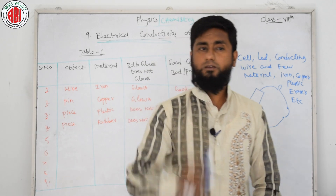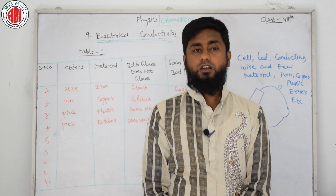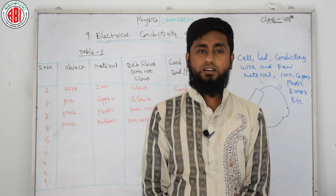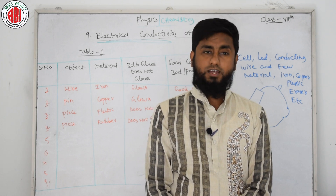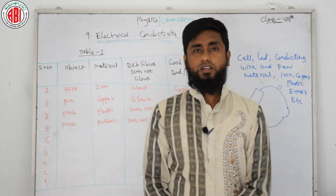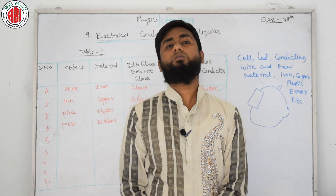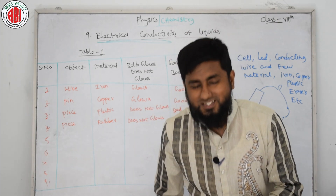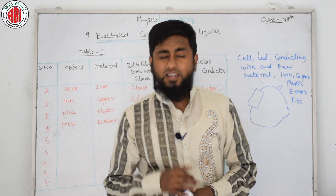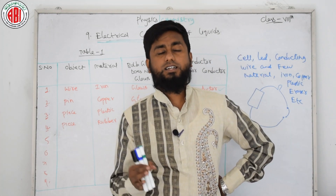Electric conductivity is a property of any given material. We can say that a material has good electrical conductivity if it allows electric current to pass through it easily. Materials that allow current are called good conductors, and materials that do not allow current are called bad conductors.